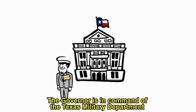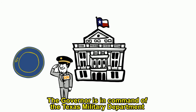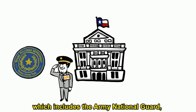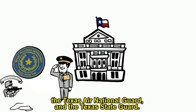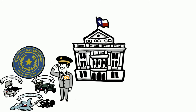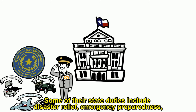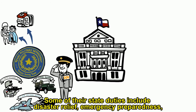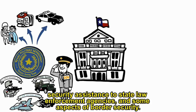The governor is in command of the Texas Military Department, which includes the Army National Guard, the Texas Air National Guard, and the Texas State Guard. Some of their state duties include disaster relief, emergency preparedness, security assistance to state law enforcement agencies, and some aspects of border security.